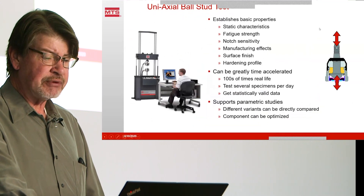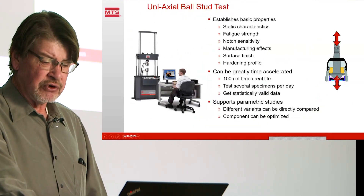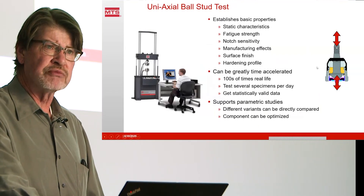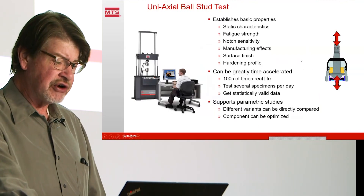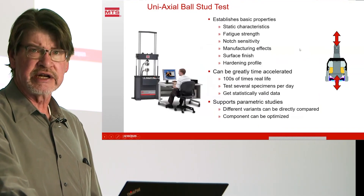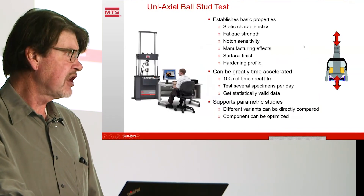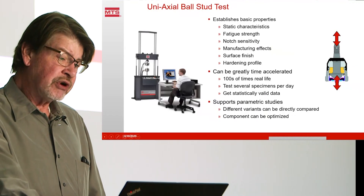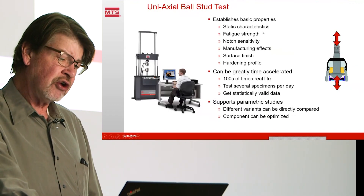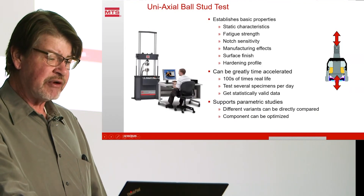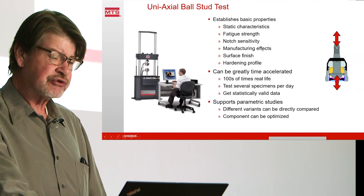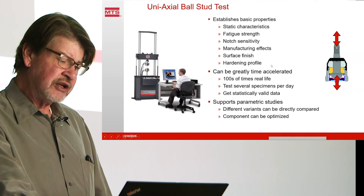Here's an example of testing a ball stud for a ball joint. Ball joints go in the suspension between the control arms and the knuckle — they allow steering and vertical motion on the suspension. They're subject to a lot of wear, a lot of dynamic loading, harsh environment. We want to establish basic properties, static characteristics: how strong is it, ultimate strength, fatigue strength. Maybe we want to evaluate notch sensitivity of the shaft, manufacturing effects, grinding, surface profile, things like that.